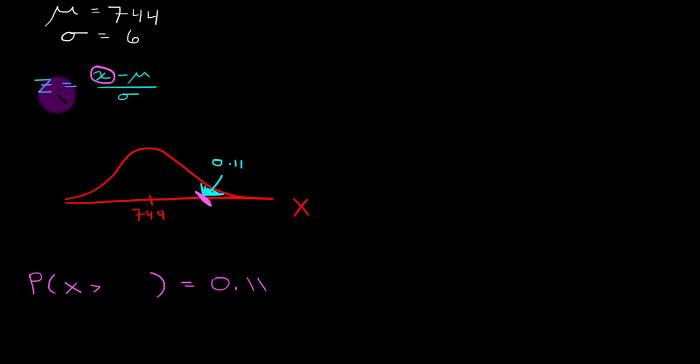What we want to do is find the z-score that corresponds to this upper 11%. Since we know that the upper 11 percentile is what is desired, we want to consider what's the area to the left of this tick mark. Since the total area is a 1, the area to the left of our desired tick mark is 0.89.